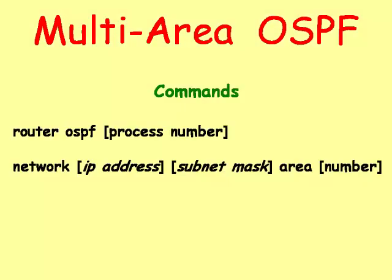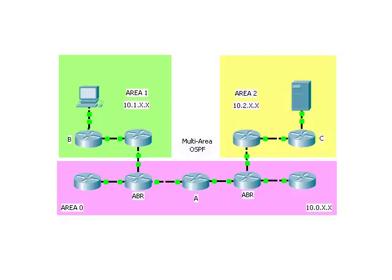The OSPF command is entered in global configuration mode so that the router will go into the router configuration mode. The main difference with using the network command is that instead of using area 0, you would choose the number of the area that the network is associated with. Now let's take a look at the configuration of some routers in a simple multi-area OSPF network.